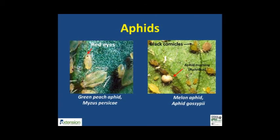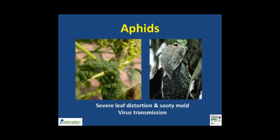Many species of aphids exist in nature and they can quickly colonize greenhouse crops in the absence of natural enemies. Aphids are small insects with piercing, sucking mouth parts. Female aphids clone themselves and give rise to daughters within one week in ideal conditions. Aphids cause severe leaf distortion due to excessive feeding on plant sap. They also produce a large amount of honeydew that is conducive for sooty mold.